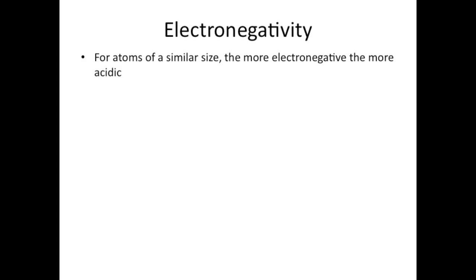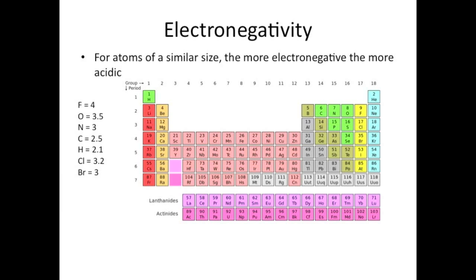So first up is electronegativity. And this trend is that for atoms of a similar size, that is atoms in the same row on the periodic table, more electronegative ones have more acidic hydrogens. So here's a periodic table. I got this from Wikipedia, so all credit to them. On the list, I have a list of good electronegativities to know for the MCAT.